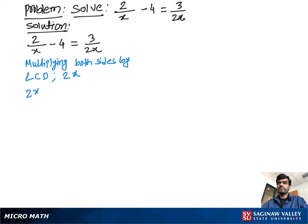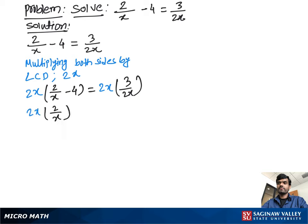To solve this problem we multiply both sides by the LCD, lowest common denominator, 2x. So we write 2x times 2 over x minus 4 is equal to 2x times 3 over 2x. Using the distributive property we can write 2x times 2 over x minus 2x times 4 is equal to 2x times 3 over 2x.